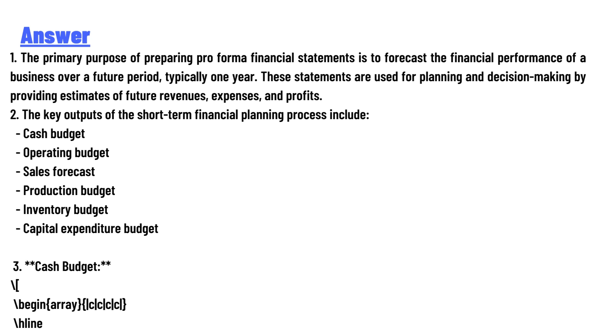The key outputs of the short-term financial planning process include: the cash budget, operating budget, sales forecast, production budget, inventory budget, and capital expenditure budget.